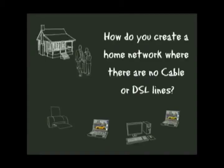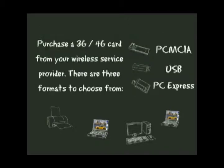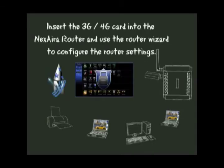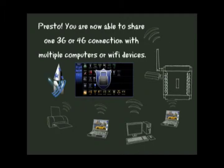How do you create a home network where there are no cable or DSL lines? Purchase a 3G-4G card from your wireless service provider. There are three formats to choose from: PCMCIA, USB, and PC Express. Insert your 3G-4G card into the Nexera router and use the router wizard to configure the router settings. Presto — you are now able to share one 3G-4G connection with multiple computers or Wi-Fi devices.